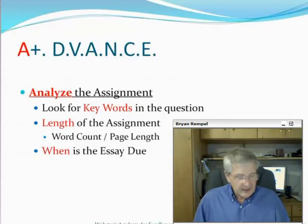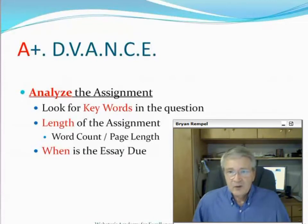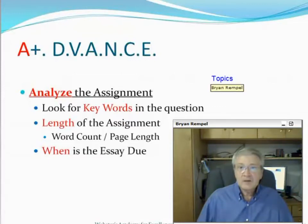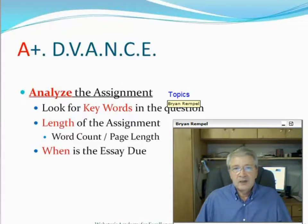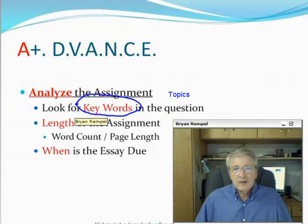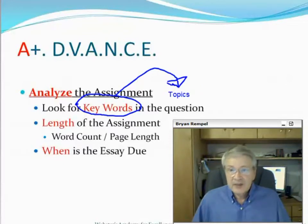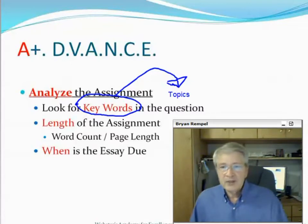What we want to start off doing is looking for the key words in the question. We're going to look at some examples on the screen in a moment. These key words should trigger what we call topics. When you're thinking key words, you're going to be thinking about topics. Every paragraph should be about one topic — if you've got another topic, that should be another paragraph. The key words in the question should signal to you what topics you can write about.